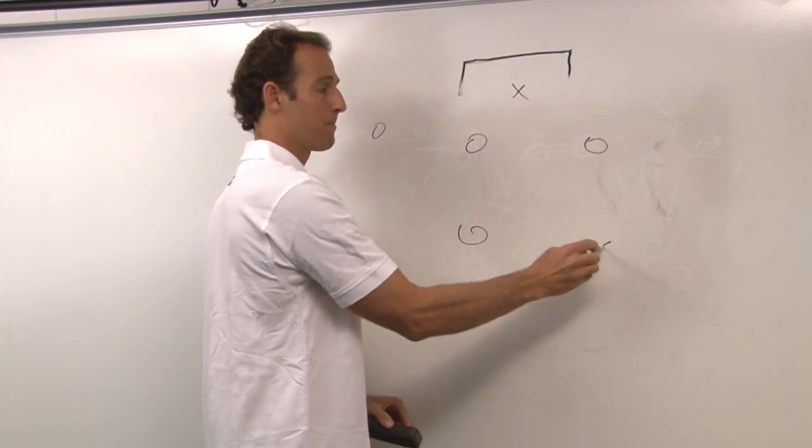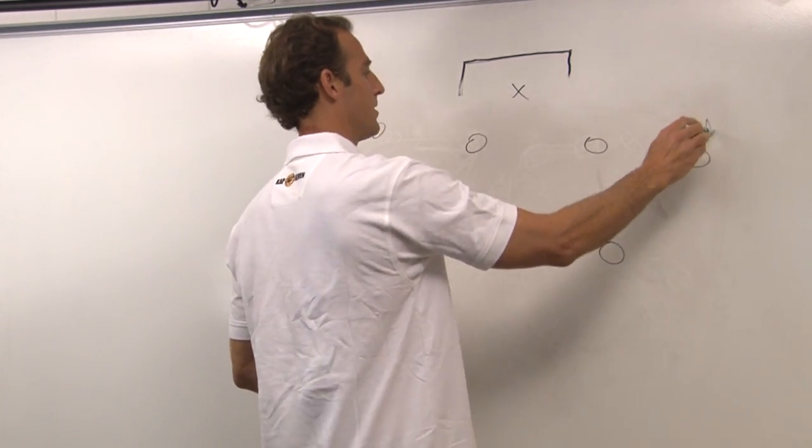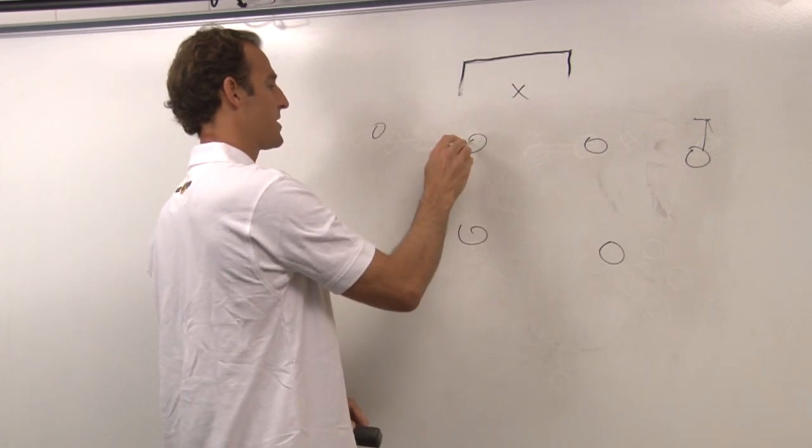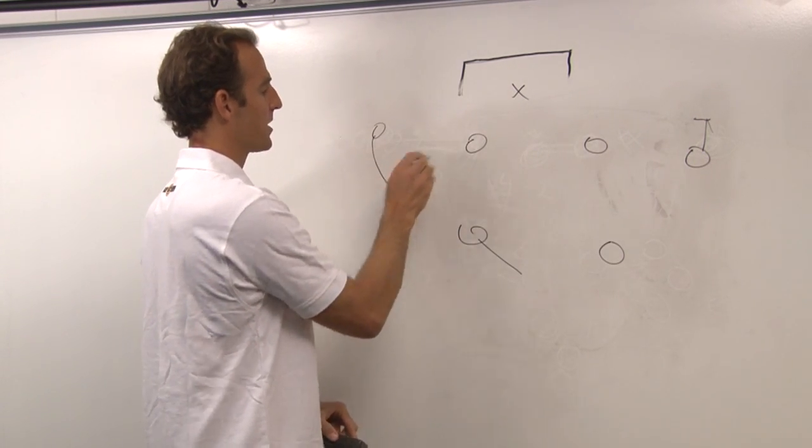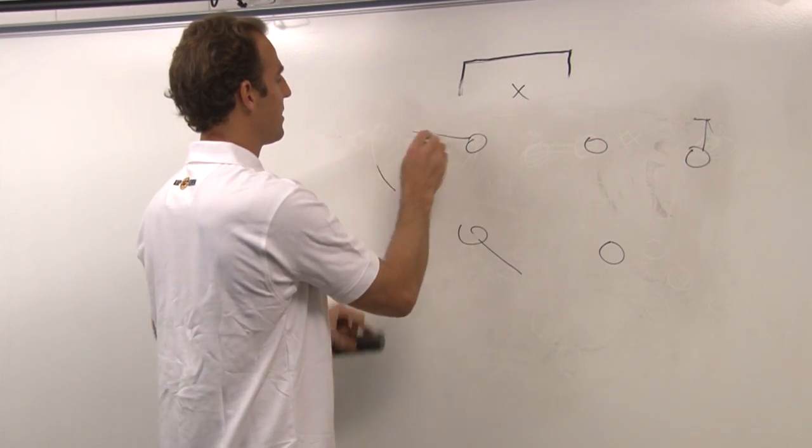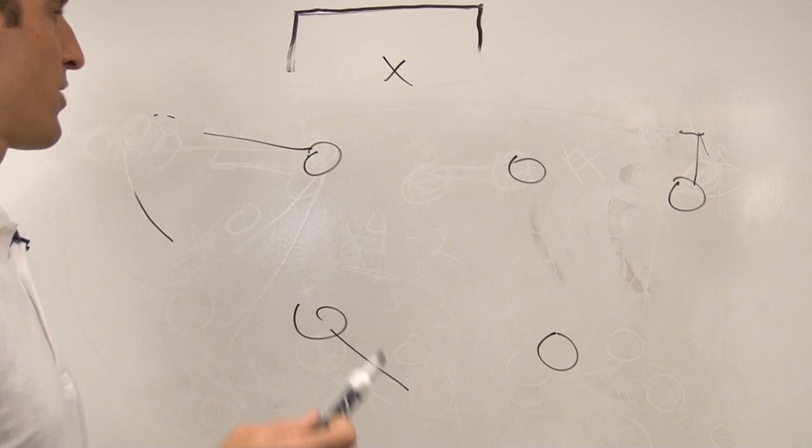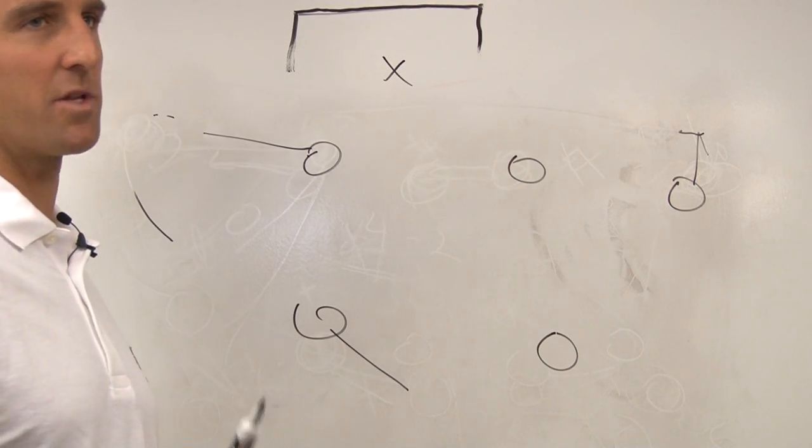So again, we'll take 6-in, and then this time this player will slide, this player will come up in the pocket, this player will slide out along the bottom line, and you pretty much get into the same system but just with a different look.